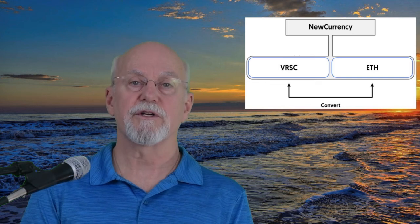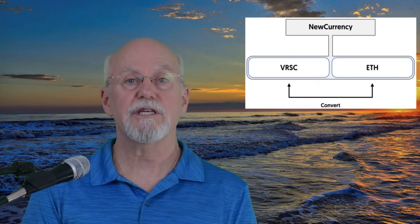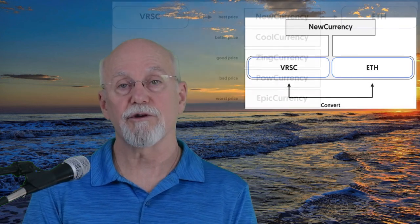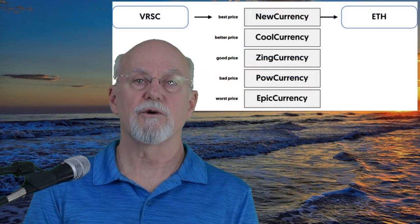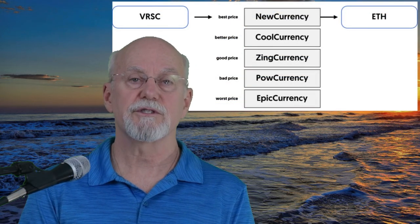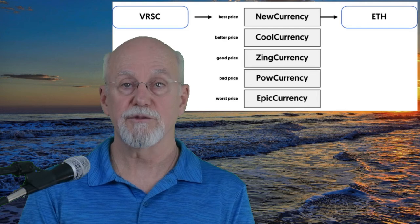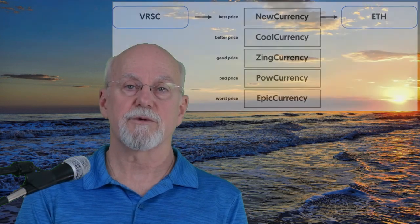For example, if you own Verus, you can convert it to ETH through New Currency. The Verus protocol will search through all fractional currencies with both Verus and ETH in its pool and present the best price. There is always value in liquidity with fractional and reserve currencies. By the way, all fractional currencies on the Verus blockchain must include Verus as a reserve. A giant and effective system of liquidity is emerging.